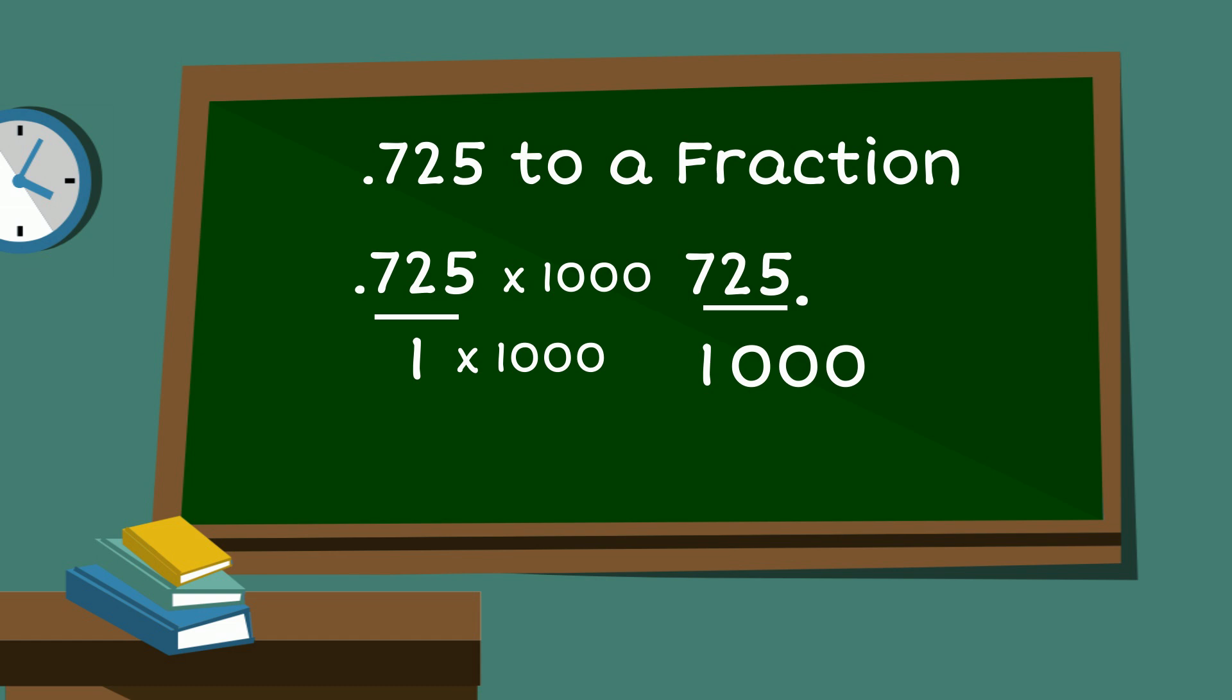Both are divisible by 25. When we divide 725 by 25, that gives us 29. 1,000 divided by 25 is 40. 29 is a prime number, so 0.725 as a fraction is 29 over 40.